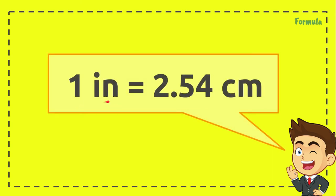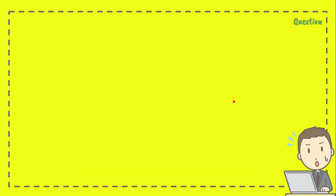This is the formula of the conversion between inches to centimeters. One inch equals 2.54 centimeters. You can call it the conversion factor as well. We are going to use it when we are solving this conversion problem.